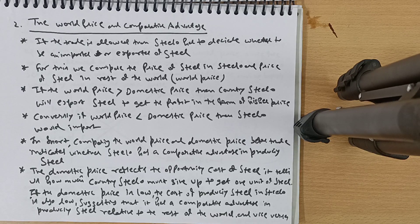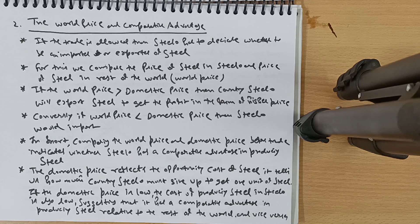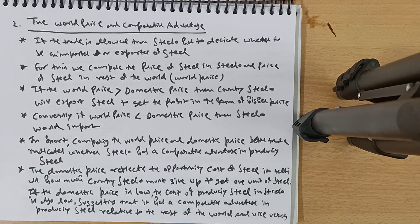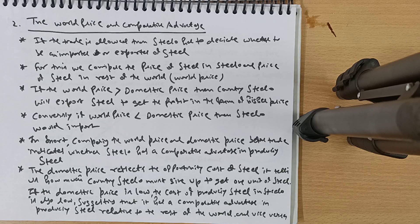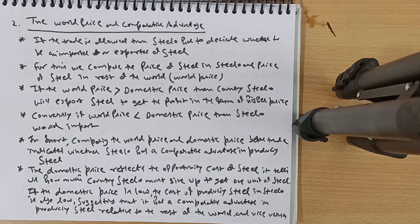In short, comparing the world price and domestic price before trade indicates whether Steelo has a comparative advantage in producing steel. The domestic price reflects the opportunity cost of steel — how much the country must give up to get one unit. If the domestic price is low, the cost of producing steel in Steelo is also low, suggesting it has a comparative advantage relative to the rest of the world. So whatever you have a comparative advantage in, that is what you must produce and sell.